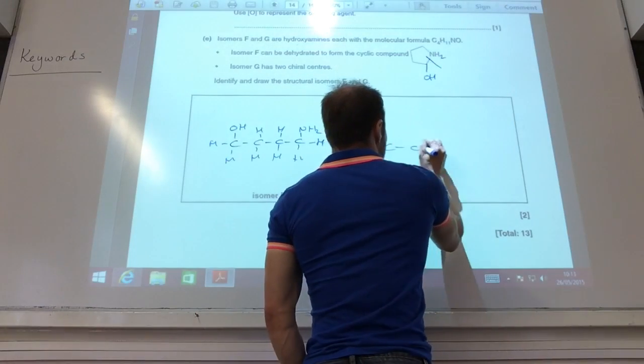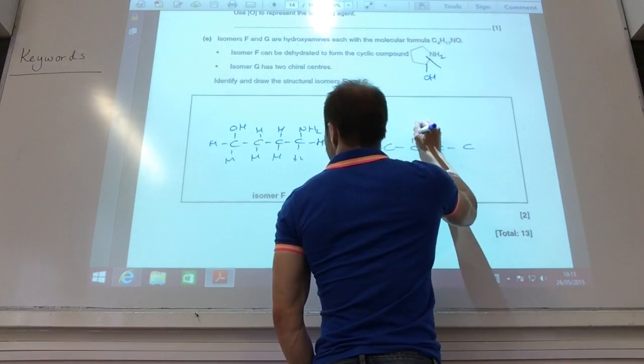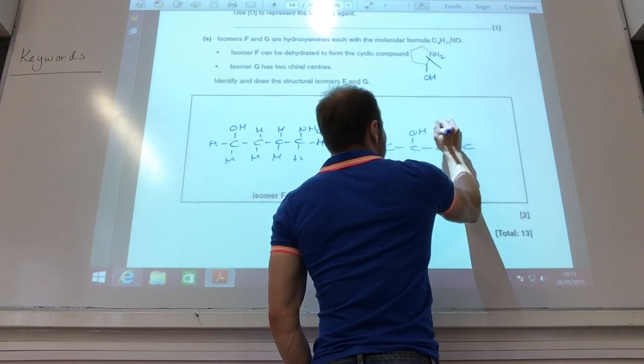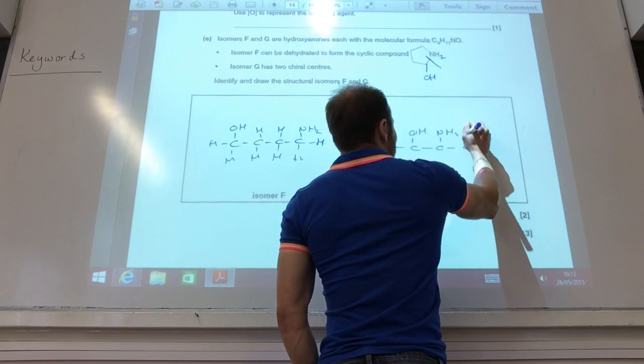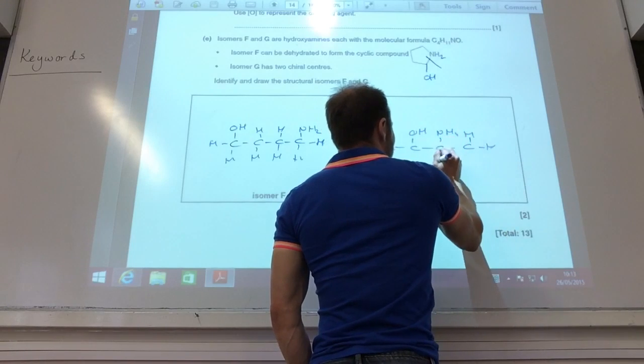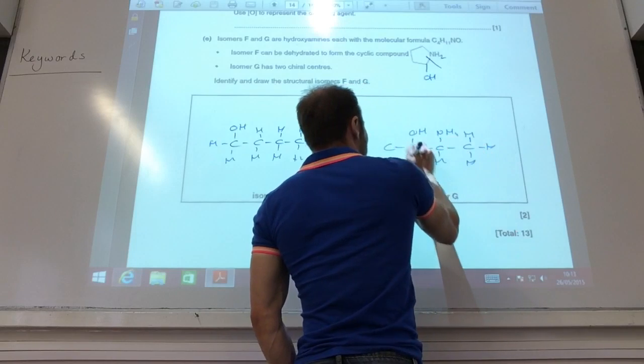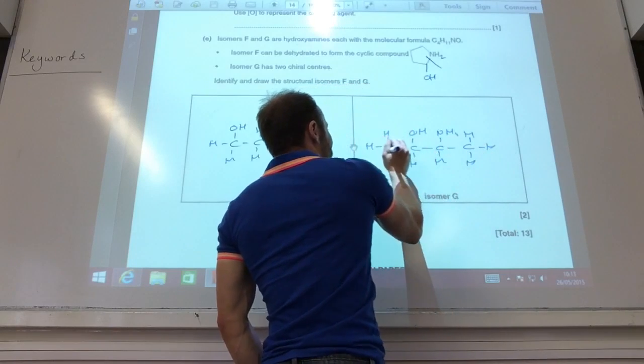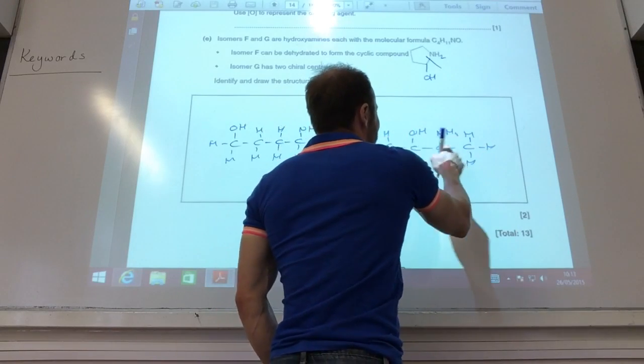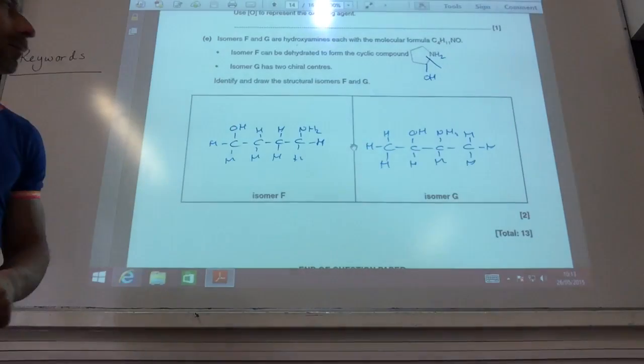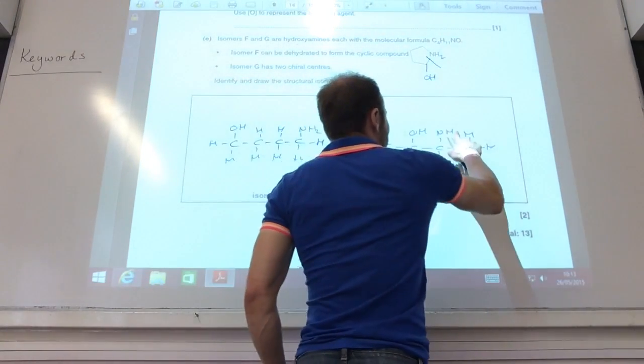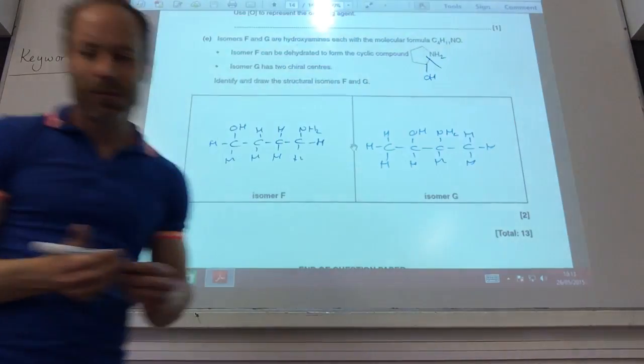Okay, and the other one's got chiral centers in, so I can easily sort that by just putting my OH and my NH2 group on carbons two and three, and now that one's chiral and that one's chiral, because they've got four different groups attached to them.